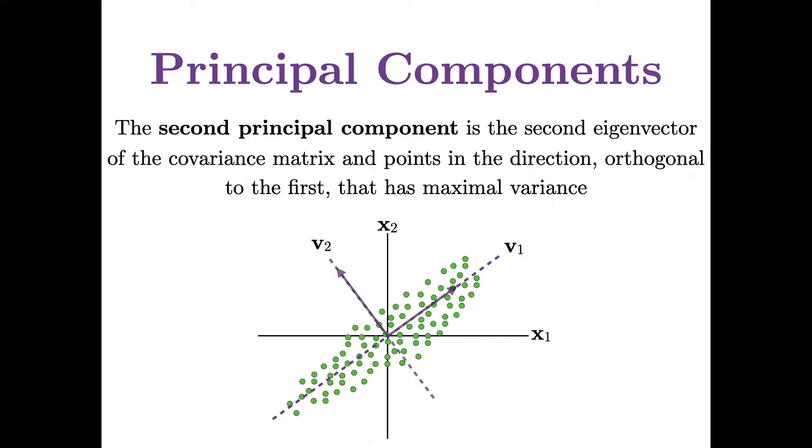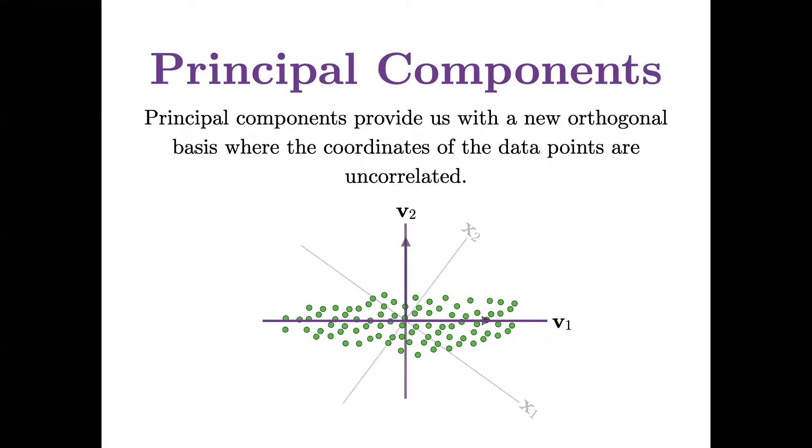The third, fourth, fifth, etc. would be orthogonal to the first, however many are before it, and maximizing variance in whatever's left. And principal components give us this new orthogonal basis where the coordinates of the data points are now completely uncorrelated.